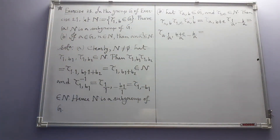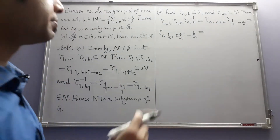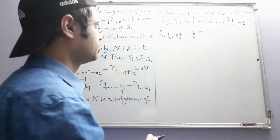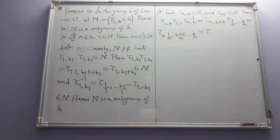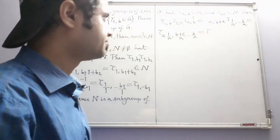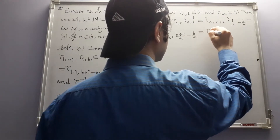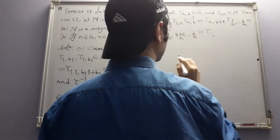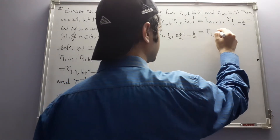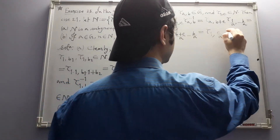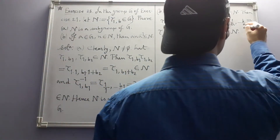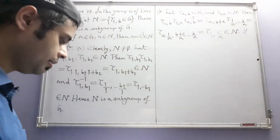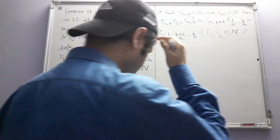Since a is nonzero, a times 1/a equals 1. The b terms: -b/a cancels with b/a, and we are left with c/a. So the result is tau(1, c/a), which again belongs to N. That's what we wanted to show. This is a computational exercise and the solution ends here.